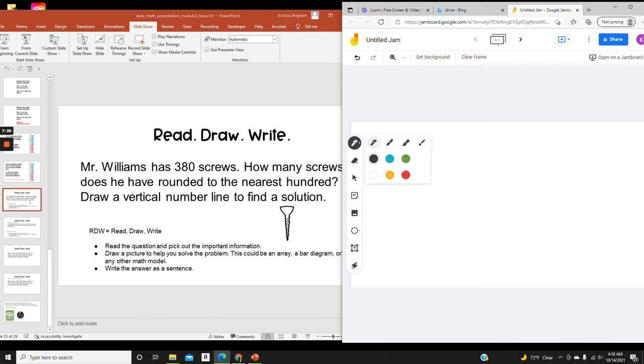So taking my pen tool, I'm going to draw a vertical number line. And vertical just means up and down. And my endpoints are going to be 300 and 400.